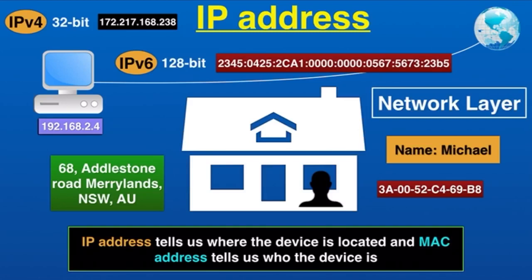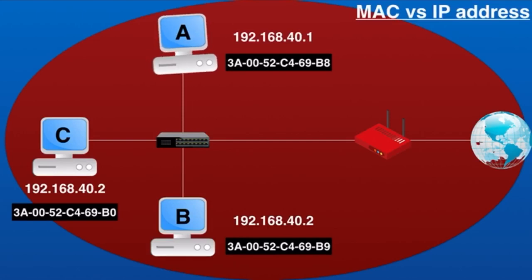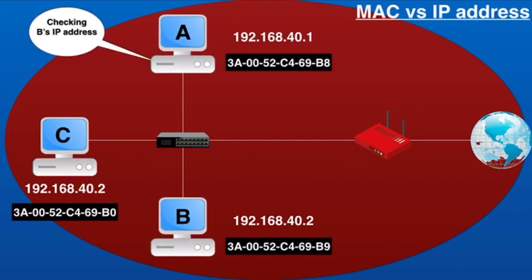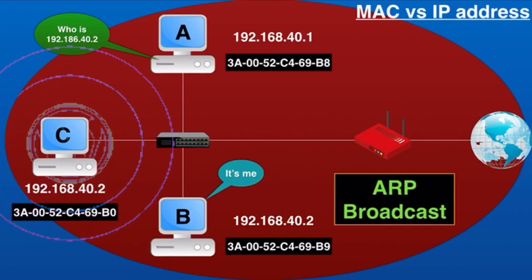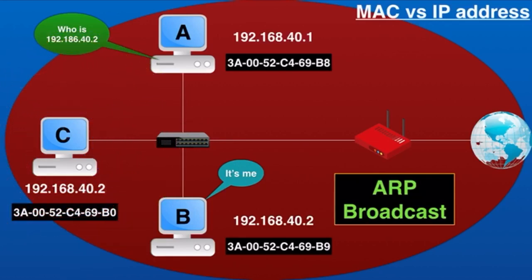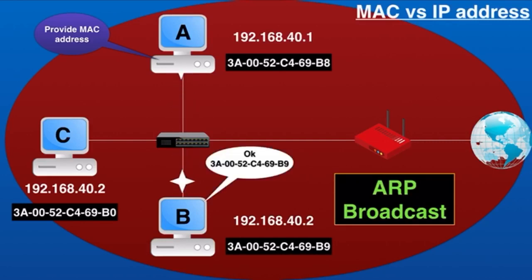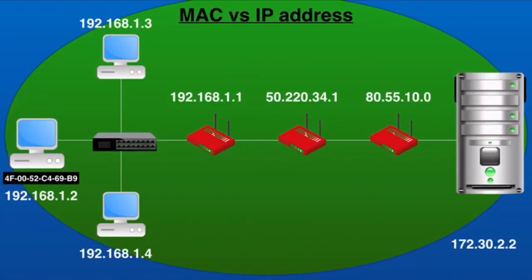The IP address for a particular connection can be retrieved using the Reverse Address Resolution Protocol. Let's take an example: here we have a local area network. Device A wants to communicate with device B, so device A checks device B's IP address to find out whether it is on the same network. Device A finds that device B is on the same network, so to start communication it needs device B's MAC address. This is done by sending an ARP broadcast to every device on the network, asking device B to identify itself by providing its MAC address.